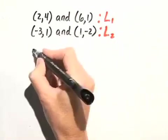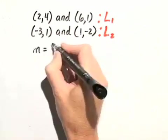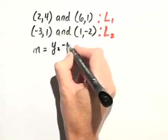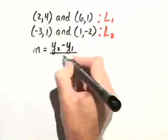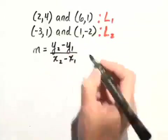The formula for the slope of a line is given by y sub 2 minus y sub 1 over x sub 2 minus x sub 1.